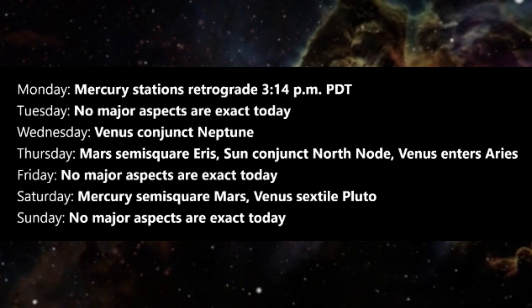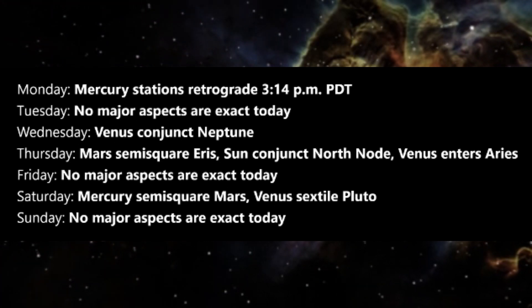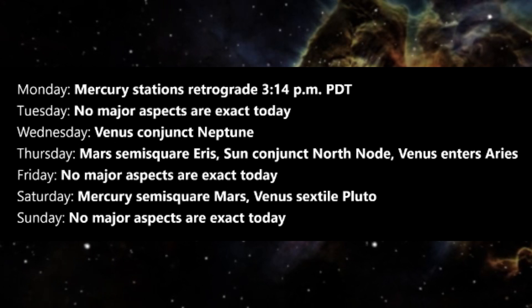This is true in relationships and also with potential purchases, resulting in buyer's remorse when the planets move on and the rosy glow fades. On Thursday, Mars is semi-square Eris.